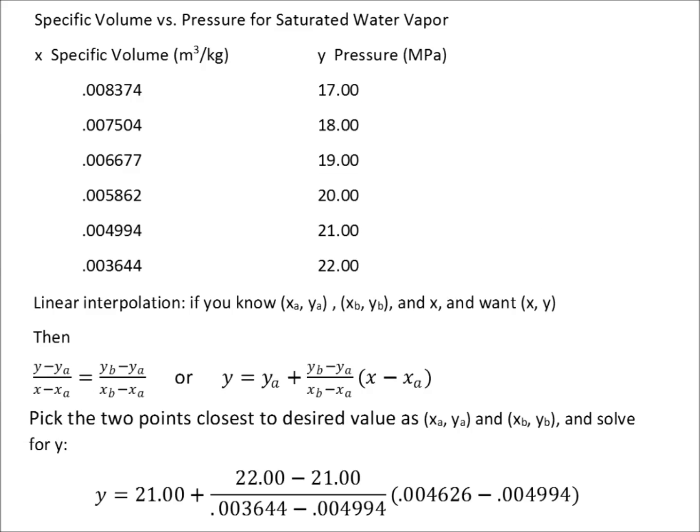We're looking for the pressure at a specific volume of .004626. So we pick the two points closest to the desired value. We know that the value we want is somewhere between .004994 and .003644 cubic meters per kilogram, which corresponds to a pressure of 21 and 22 megapascals. This will be our XA, this will be our XB, this is our YA, and this is our YB. The X value is .004626. So you plug those numbers into this equation and solve for Y.